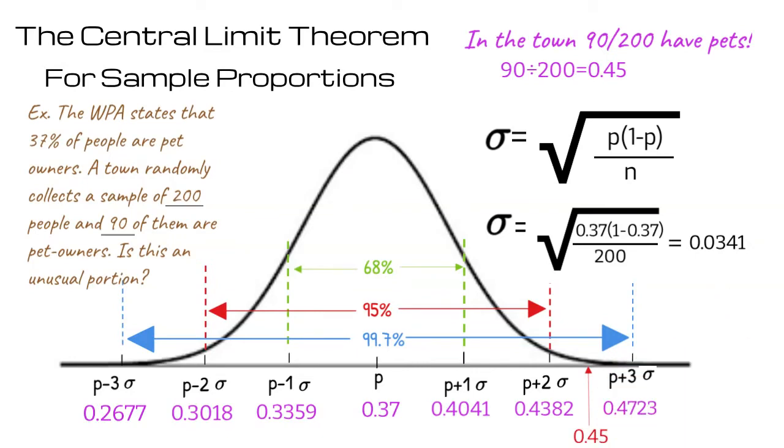On our curve, 0.45 lies within three standard deviations from the mean, so it isn't entirely unusual. However, this proportion's position on the normal curve does show that the proportion of pets is higher than it would be for most other samples.